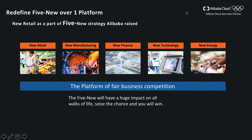New retail is not the only concept raised by Alibaba. Alibaba also introduced four other new strategies: new manufacturing, new finance, new technology, and new energy. Here, new energy means data — data is becoming the most important asset for enterprise companies. New technology refers to cloud computing, big data, artificial intelligence, and IoT. These technologies are changing business models in manufacturing, finance, and retail, and will have a huge impact on all walks of life.